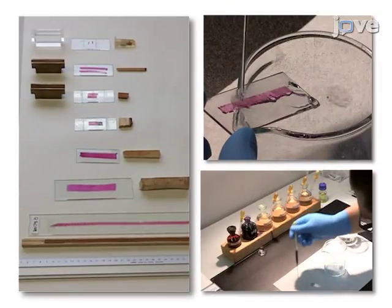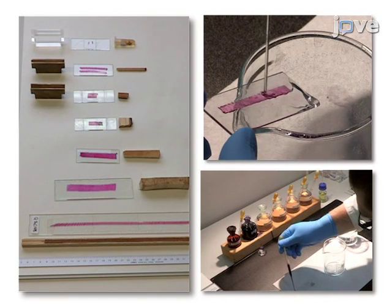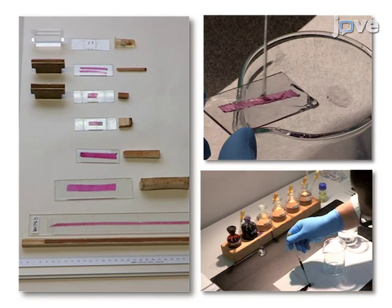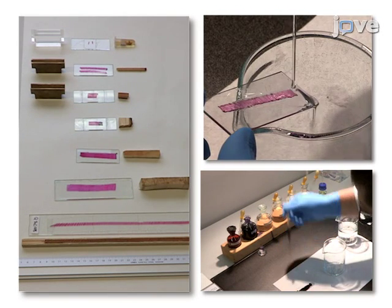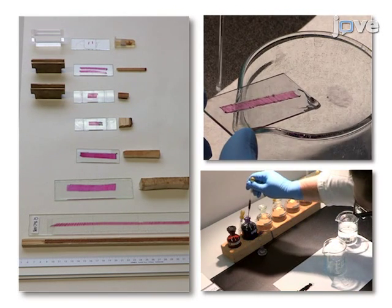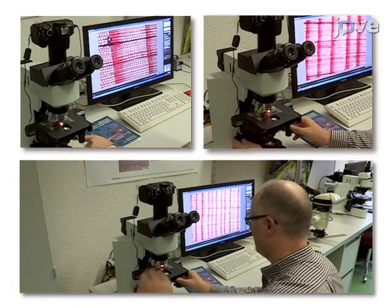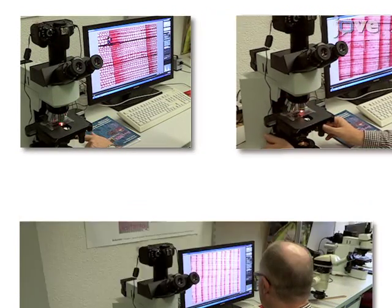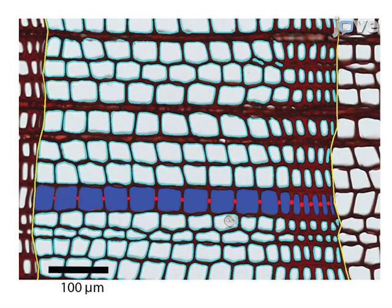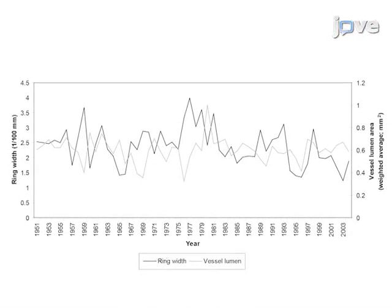As a second step, the microsections are double-stained to facilitate the differentiation of the lignified and unlignified cells, and then digital images are taken of the samples. Ultimately, automated cell-based analyses of the plant growth and related time-series analyses can be performed to allow the evaluation of the wood anatomical parameters of interest.